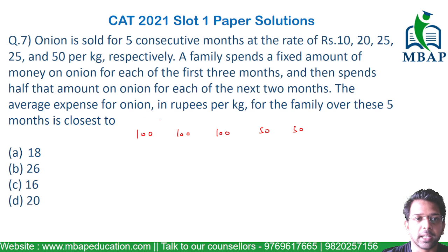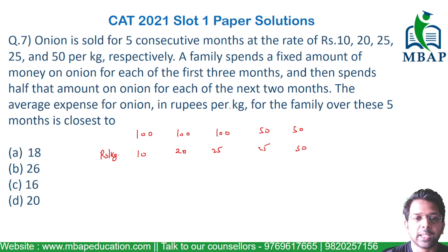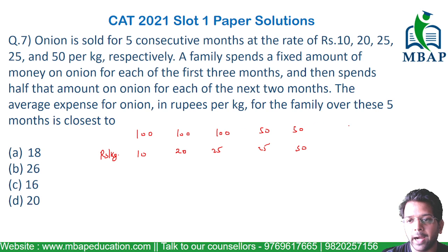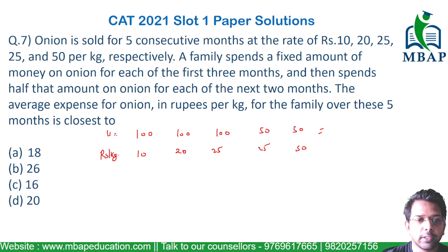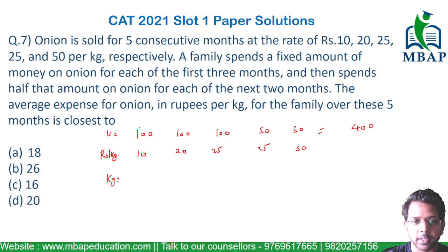The prices of onion per kg are 10, 20, 25, 25, and 50 rupees per kg respectively. The total amount spent is 100 + 100 + 100 + 50 + 50, which equals 400 rupees. Now let's find the quantity of onions purchased each month.